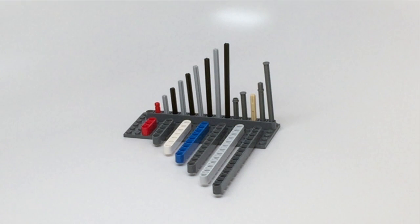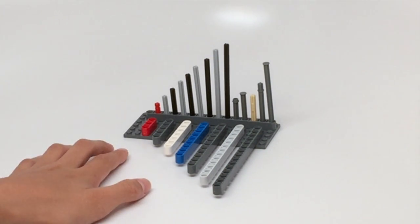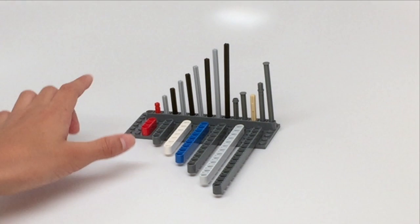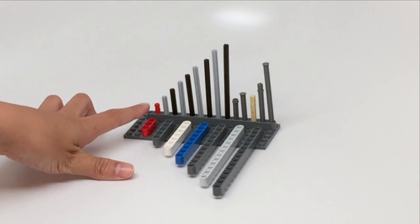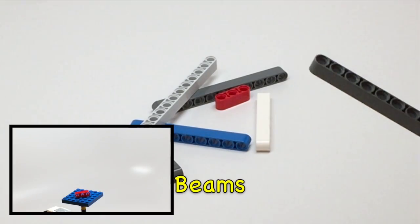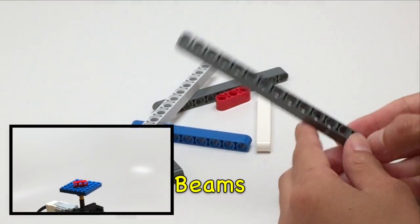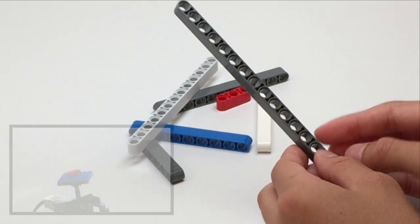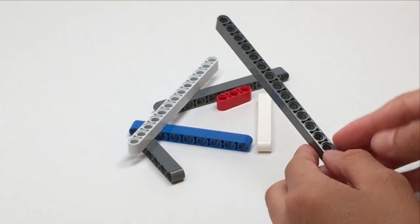Beams are these long pieces of LEGO that have holes running through them, and axles are these rods that have a cross shape. Beams come in length three holes like so, all the way to length 15 holes like this one, and they always come in an odd number of holes.